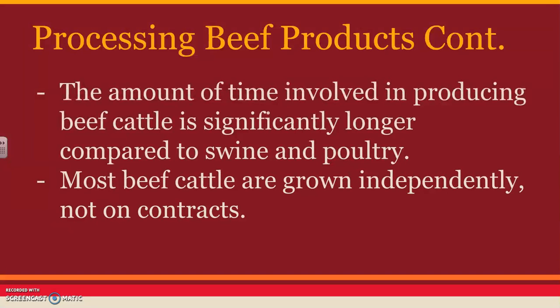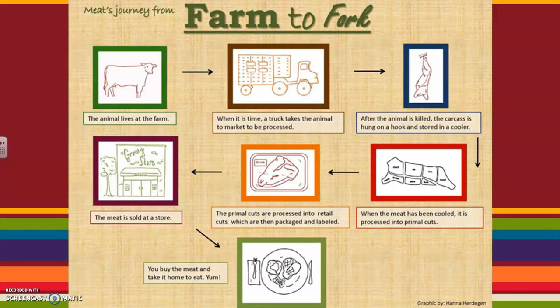The amount of time involved in producing beef cattle is significantly longer when you look at swine and poultry. Poultry broilers, for example, are only in the system for about six weeks, and swine are much shorter as well. Beef cattle takes a year and a half to two years to process an animal. Most beef cattle are grown independently, so they're not grown on a contract — we're going to talk about contracts when we talk about marketing. This diagram just shows you the process through which the animal goes once they're ready to be sold.